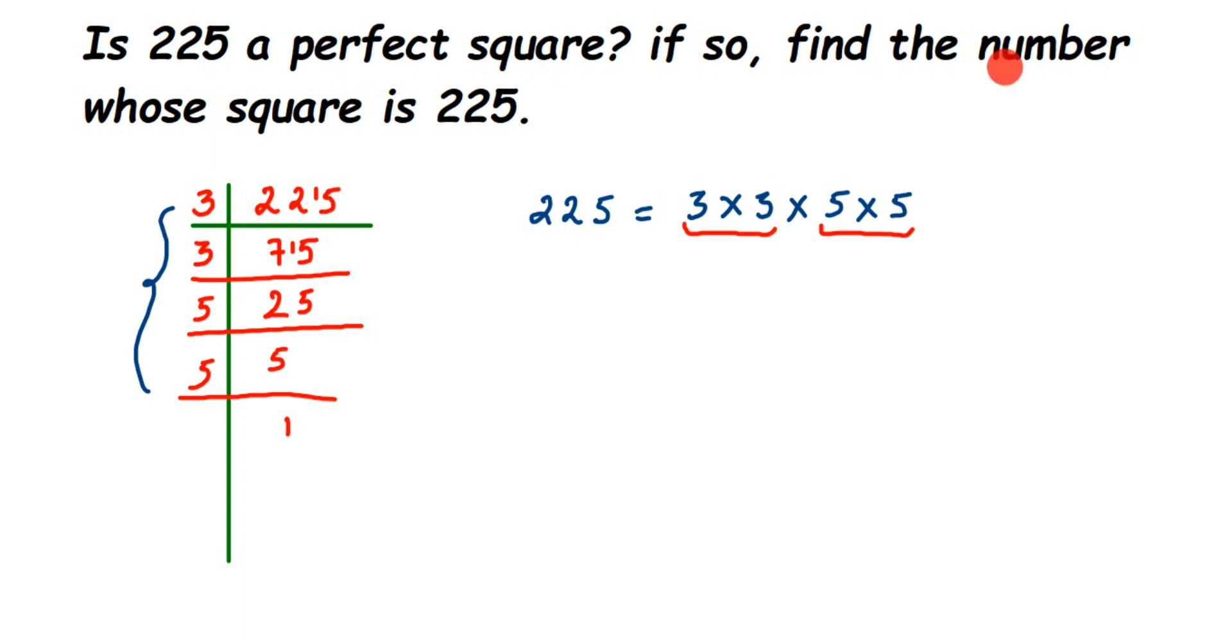Now the next question is: if so, find the number whose square is 225. Which means we have to find out the square root of 225. Whose square means with what number should be multiplied two times to get 225? That's what square root is about. So how to find out the square root? From here itself you're going to find out the square root.